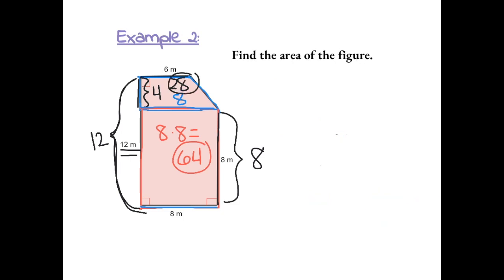Now to find the area of the entire figure, we want to add 64 plus 28. 8 plus 4 gives us 12. 6 plus 2 gives us 8 plus 1 more is 9. So the area of the entire shape is 92 meters squared.